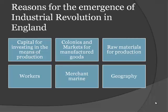Reasons for the emergence of the Industrial Revolution in England: capital for investing in the means of production, colonies and markets for manufactured goods, raw materials for production, workers, merchant marine and the geographical condition of England.